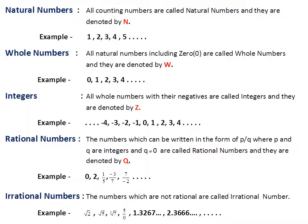All counting numbers are called natural numbers and they are denoted by capital N. For example: 1, 2, 3, 4, 5, and so on. This means if we want to count anything in our home or our surrounding, we start from 1, so 1, 2, 3, 4, 5 and so on are called natural numbers.